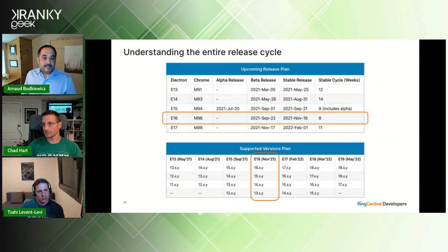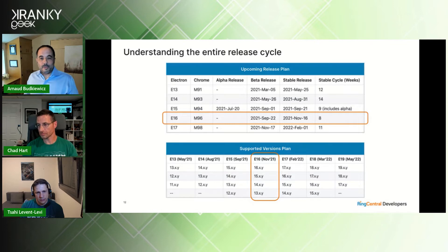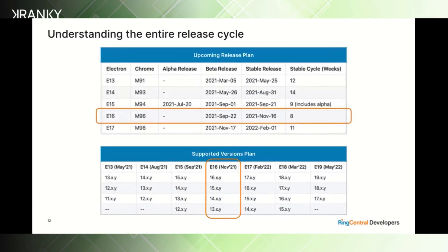As an example, Electron 16 was released two days ago — it comes with Chromium 96, and supported versions are 13 through 16. Again, in May 2022 the Electron community will support only versions 17, 18, and 19.